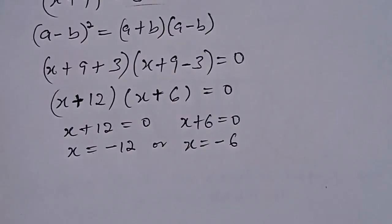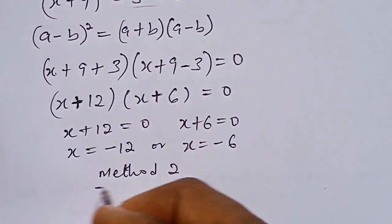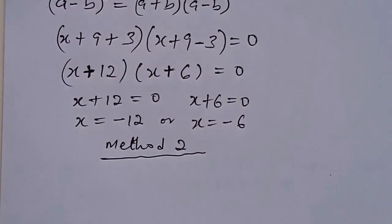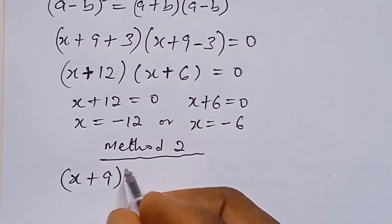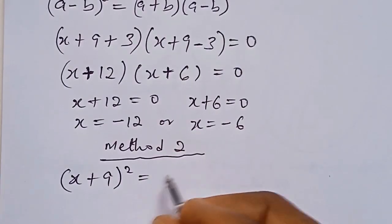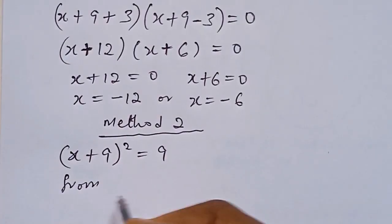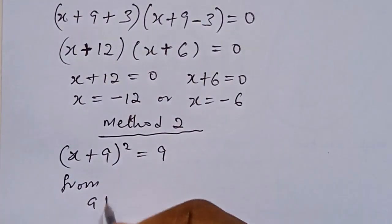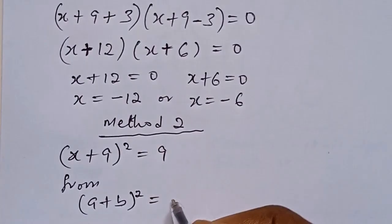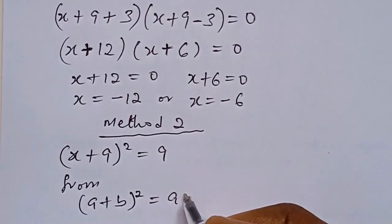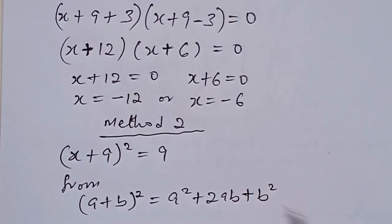Then for the second method, we have x plus 9 in bracket to the power of 2 equal to 9. From this identity, a plus b in bracket to the power of 2 is expressed as a squared plus 2ab plus b squared.